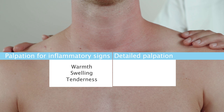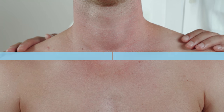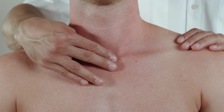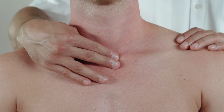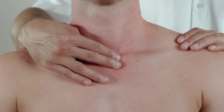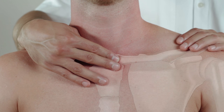Afterwards, a more detailed palpation of the muscle and bone structures within the shoulder region should be conducted from the front and rear of the patient. Start by palpating the surface of the sternoclavicular joint and pay attention to any tenderness or swelling, which may indicate osteoarthritis or subluxation.